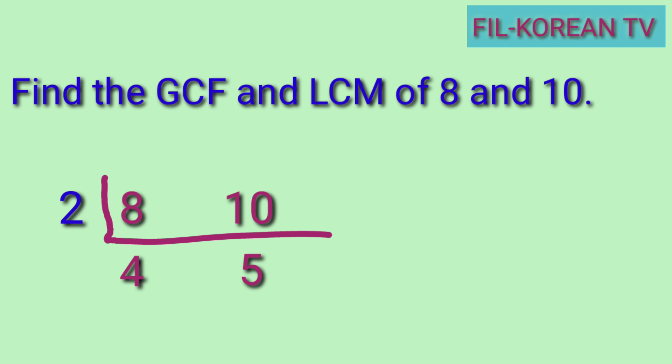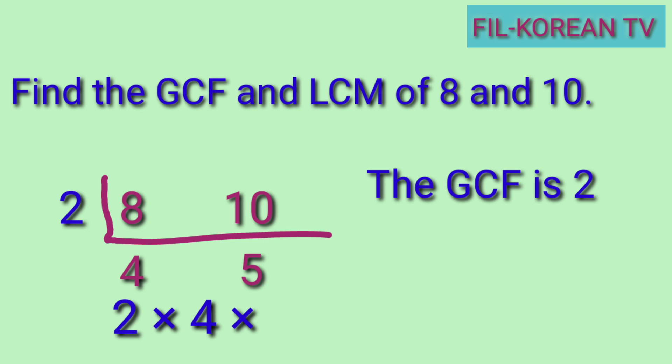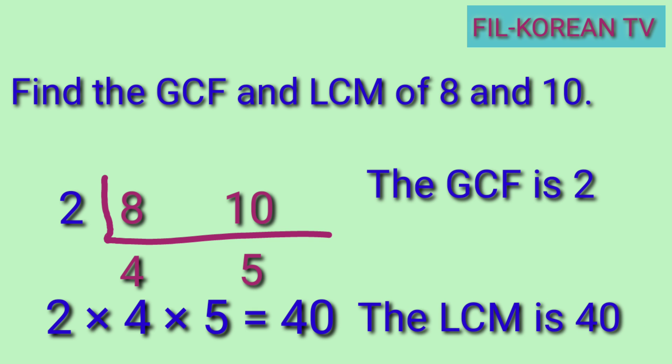The quotients 4 and 5 do not have other common factors aside from 1, so we will not divide them anymore. Since there is only one prime number that can divide 8 and 10, and that is 2, automatically 2 is the GCF of 8 and 10. To get the LCM of 8 and 10, we are going to multiply the prime factor and the quotients: 2 times 4 times 5 equals 40. So 40 is the LCM of 8 and 10.